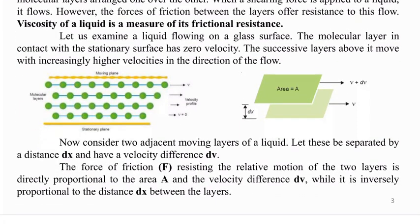Now consider two adjacent moving layers of a liquid. Let these be separated by unit distance dX and have a velocity difference dV. The force of attraction resisting the relative motion of two layers is directly proportional to area A and the velocity difference dV, while it is inversely proportional to the distance dX between the layers.